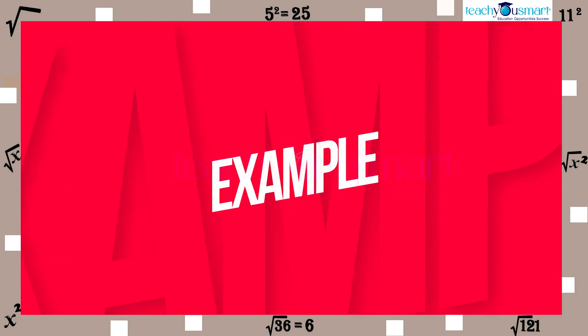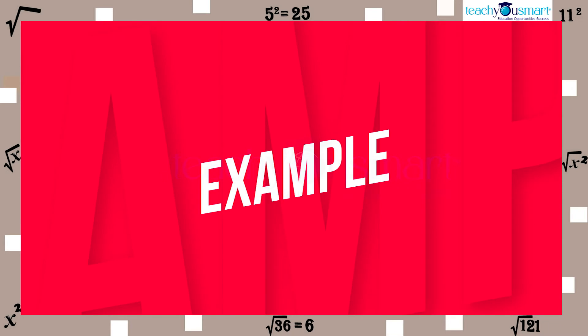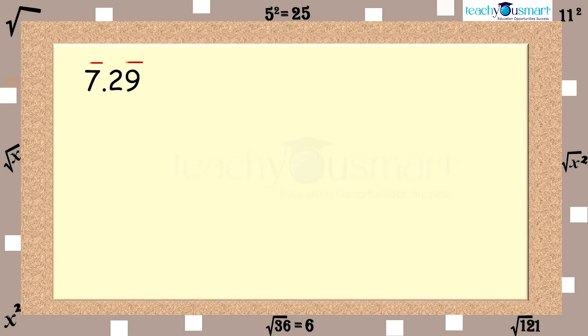Let's move on to another example. Find the square root of 7.29. Put the bar on 7 and 29.